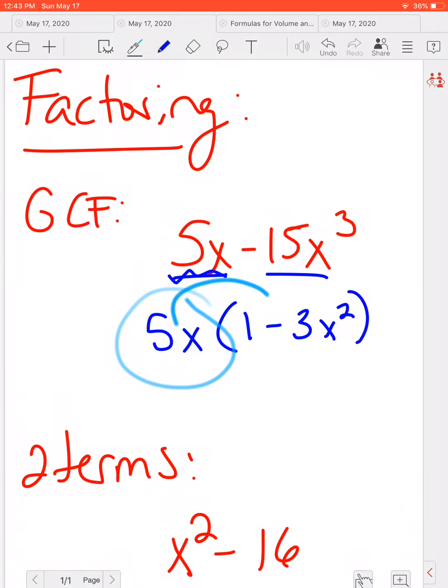Now remember we can always check ourselves by doing 5X times 1 would give me 5X and 5X times minus 3X squared would give me minus 15X cubed. So you can always check that out when you're doing factoring and making sure that you're pulling out the greatest common factor.